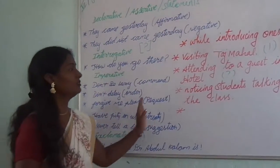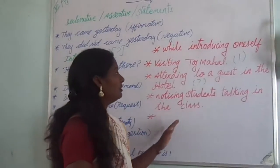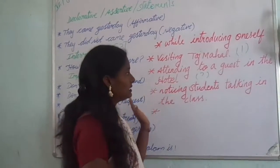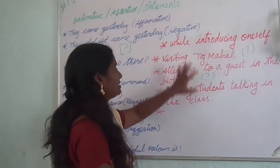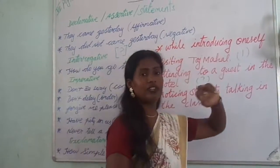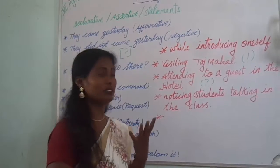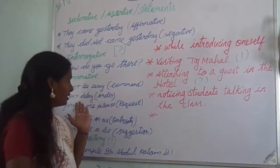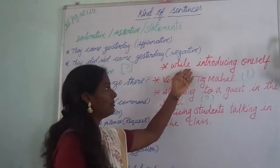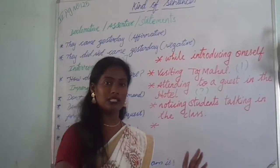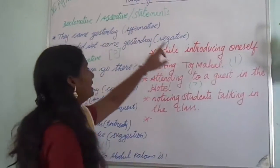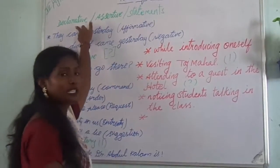When we know all these only, we can go to our exercise. In the book it is given as a situation — in what situations these sentences will come. When we are going to introduce ourselves, the statement will be declarative. My introduction will be: 'I am this and this. I like this and this.' So it is a kind of statement. My introduction will always be in a declarative statement.